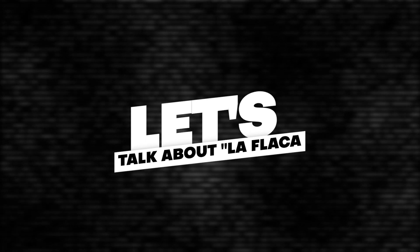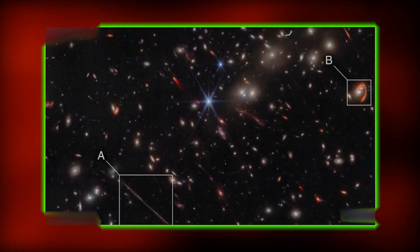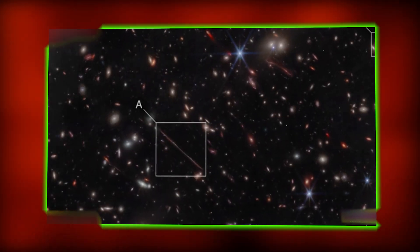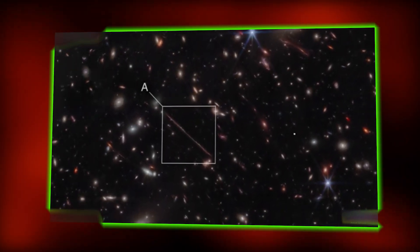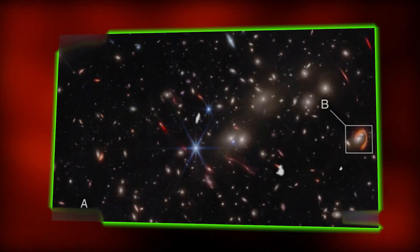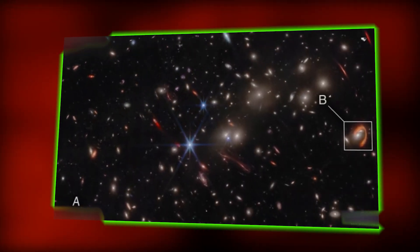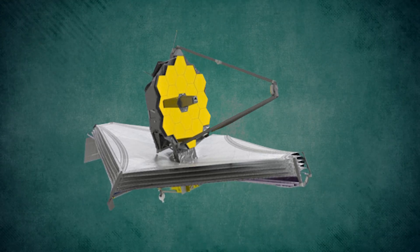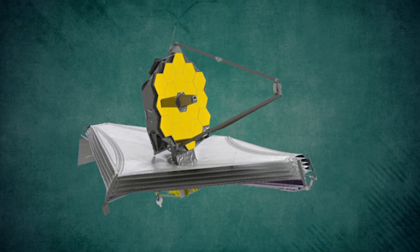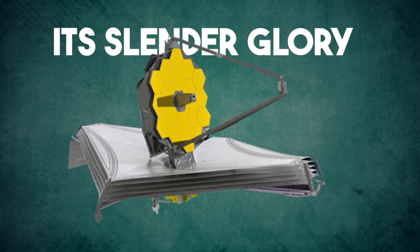Now, first, let's talk about La Flaca. It's a galaxy so slender that it could probably sneak through the tiniest wormhole. It took a mind-boggling 11 billion years to send its light our way, and it was worth the wait. Thanks to the James Webb Space Telescope's superpower, its infrared vision, we've been able to see La Flaca in all its slender glory.